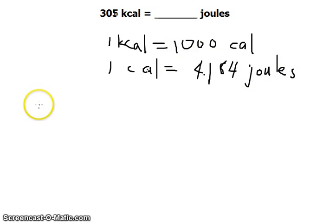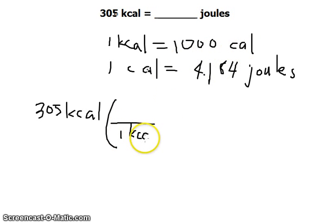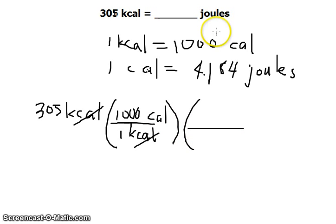Our solution would go like this. 305 kilocalories, and we multiply it by the conversion factor to have our units in calories. One kilocalorie at the bottom so that we would cancel out the units is 1000 calories. So we have now the unit in calories and our goal is to have it in joules. So we need to cancel out the calories unit here.